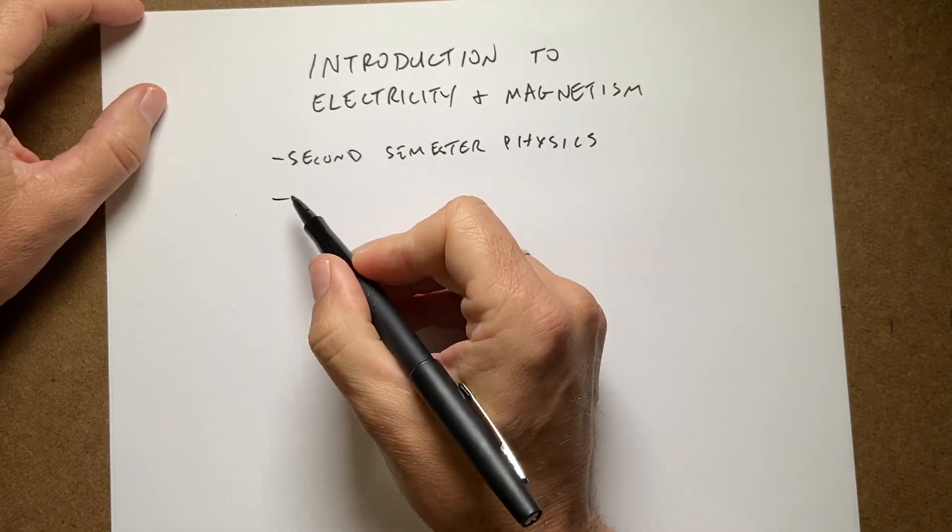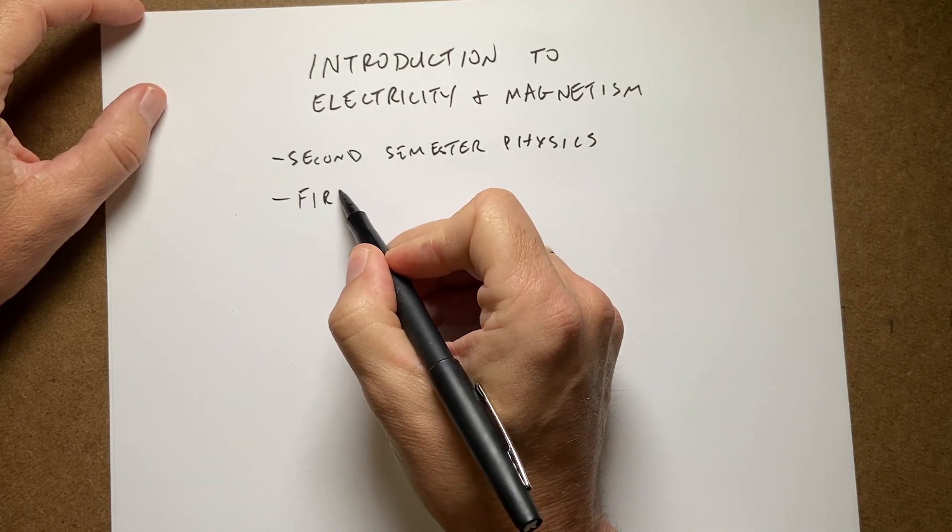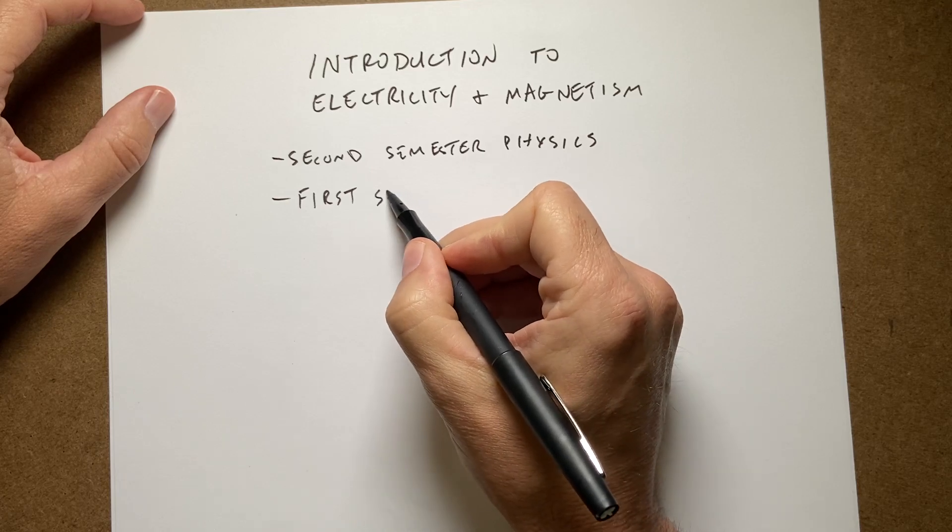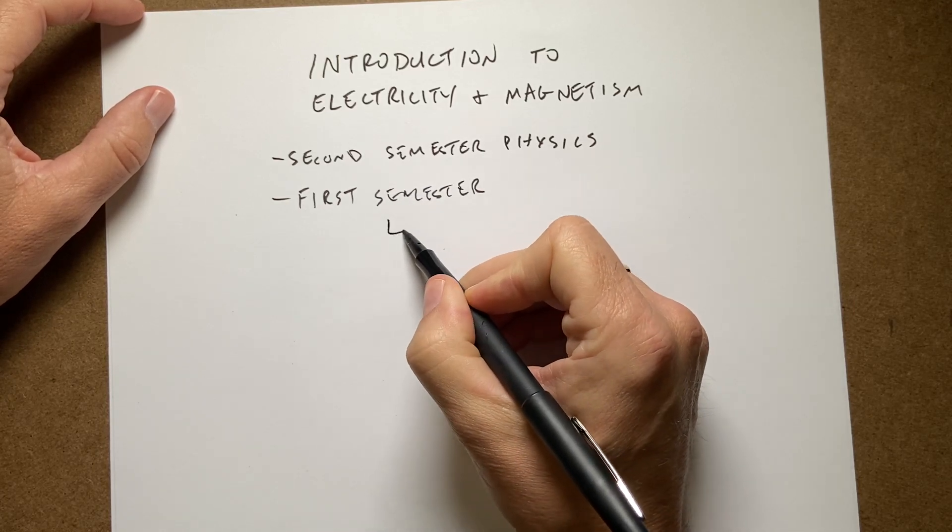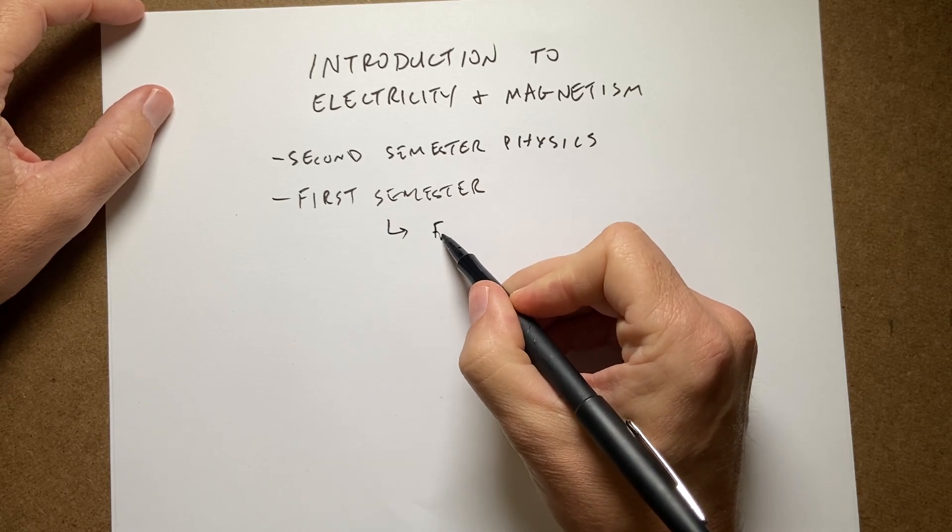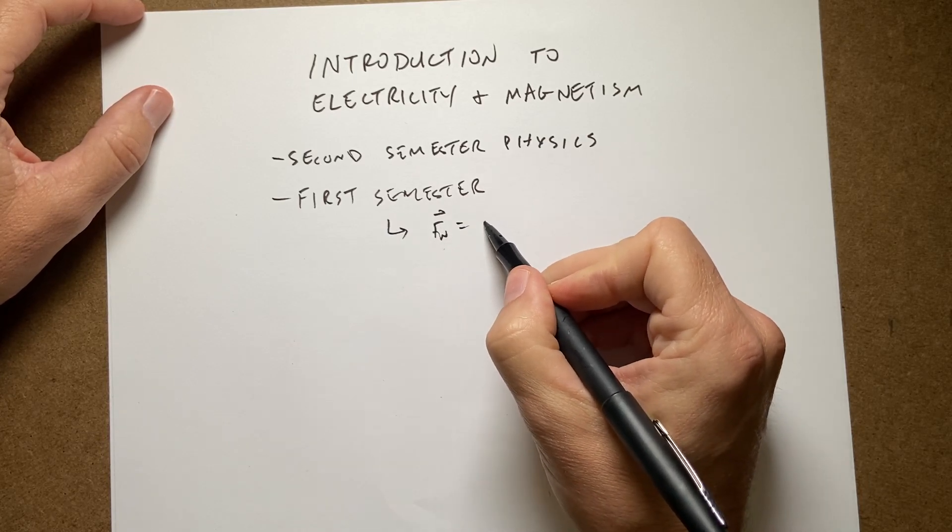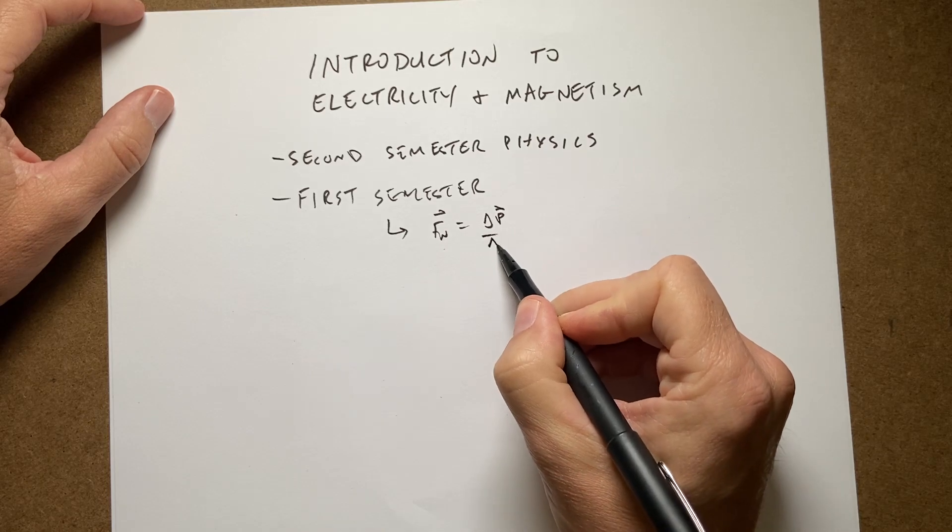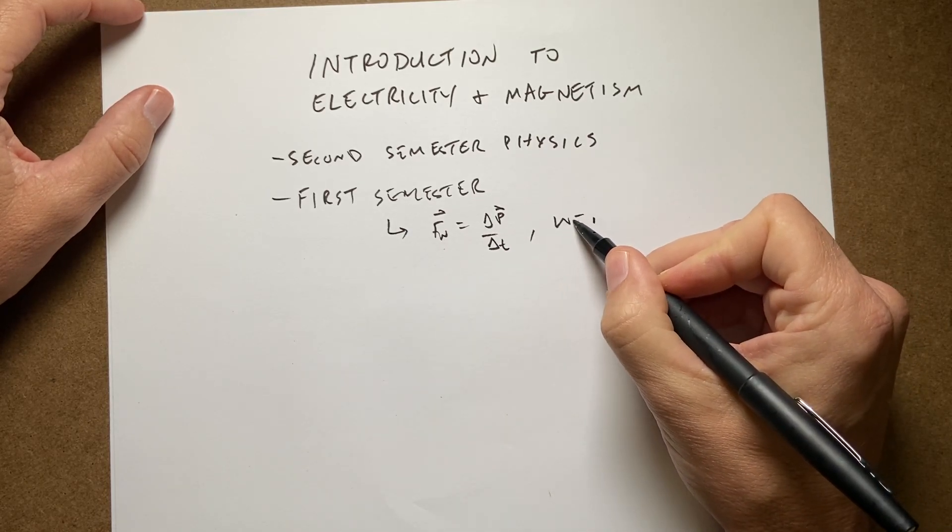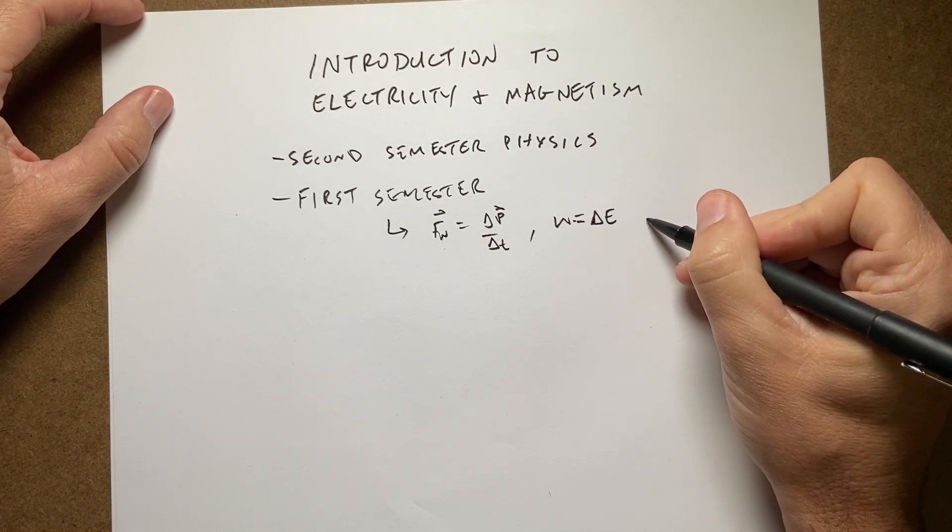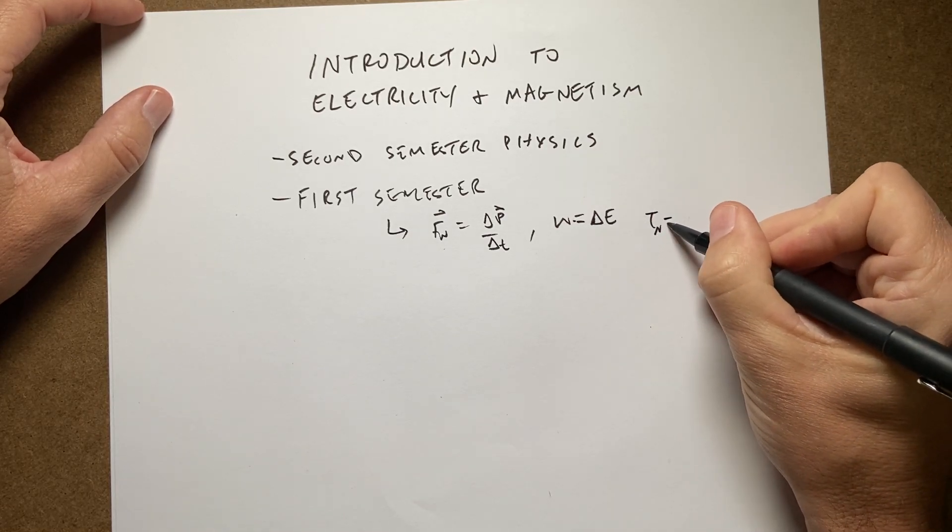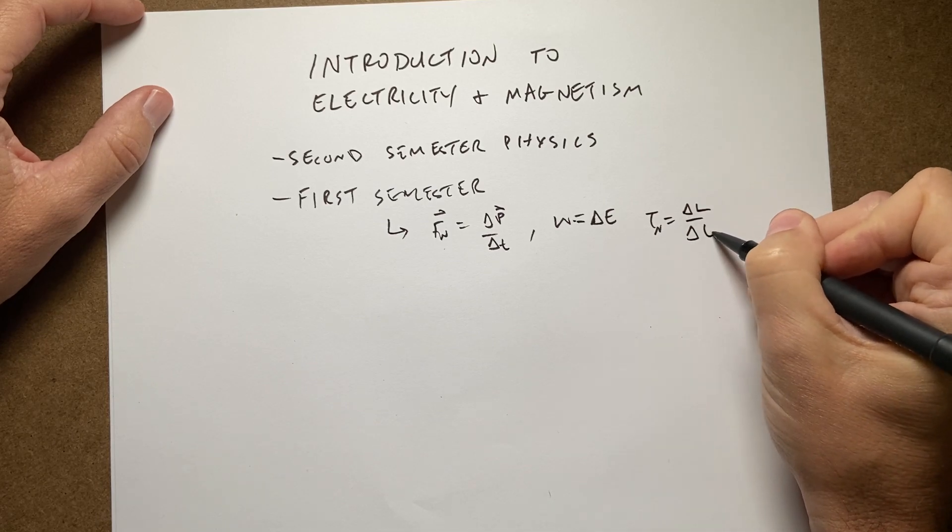So in the first semester, there's some important things that you still need to know. In the first semester, really you cover three things. You cover the momentum principle - F net is the change in momentum over the change in time. You cover the work energy - work is the change in energy. And then you cover the angular momentum principle, which is the net torque is the change in angular momentum over the change in time.